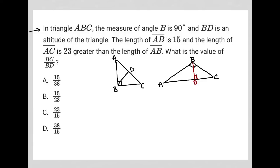So it says the length of AB is 15. So I can label that as 15. And the length of AC is 23 greater than the length of AB. Well, that means that this is 38, right? 23 plus 15 is 38.